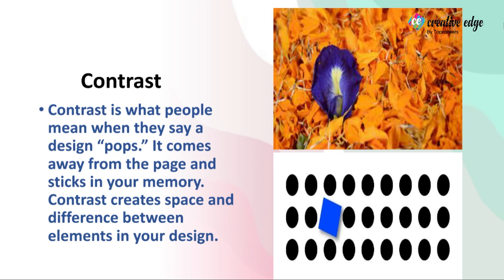In the first image, you can see opposite colors shown with flowers — you can see opposite colors clearly. In the second image, we can see the difference between shapes: there are contrasts where the circle is opposite and the color is opposite, and there are squares. In this way we can see contrast.